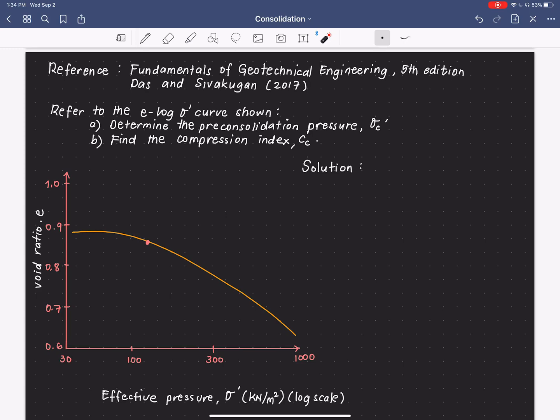So, if you remember, the preconsolidation pressure is obtained graphically by simply following several simple steps. The first thing to do is to locate the maximum curvature point or the minimum radius of curvature. So, from this graph, it is found that the maximum curvature point is at this point. Let us write this is the MCP.